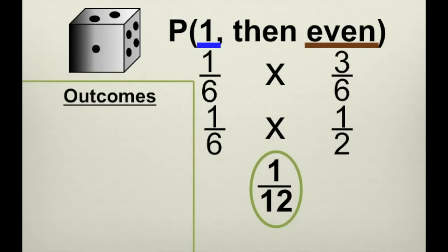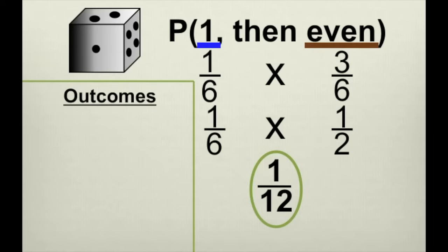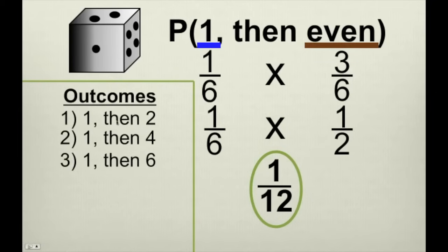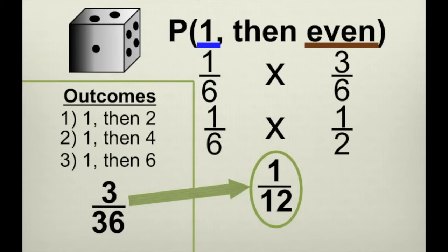Let me show you exactly why the probability is one-twelfth. When there are six outcomes possible for the first event and six for the second, the total number of possible outcomes is six times six, which is thirty-six. Of those thirty-six outcomes, how many ways can we roll a one on the first roll and an even number on the second? There are three: one then two, one then four, and one then six. That's three out of thirty-six, which reduces to one-twelfth.